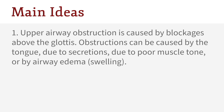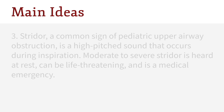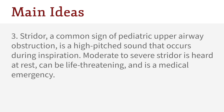The main takeaways are: upper airway obstruction is caused by blockages above the glottis. Obstruction can be caused by the tongue due to secretions, due to poor muscle tone, or by airway edema or swelling. Airway obstruction can be an emergency and deserves immediate medical attention. Additionally, stridor — a common sign of pediatric upper airway obstruction — is a high-pitched sound that occurs during inspiration. Moderate to severe stridor is heard at rest, can be life-threatening, and is a medical emergency.